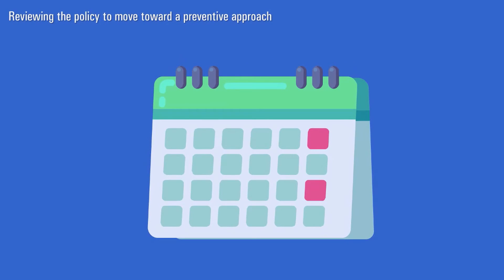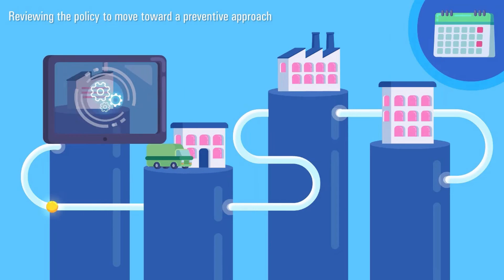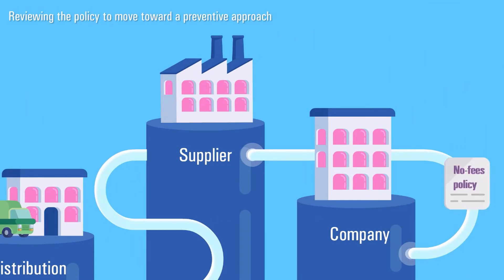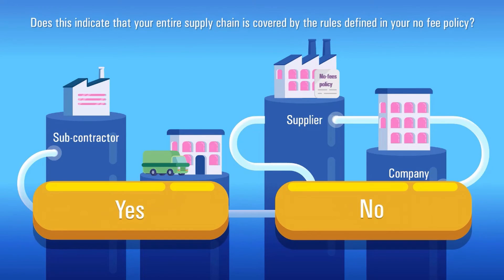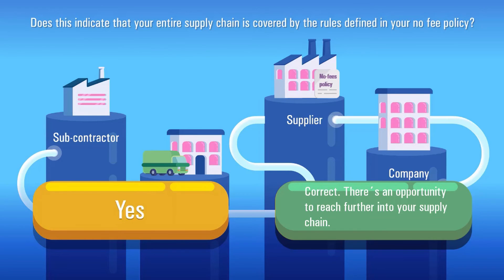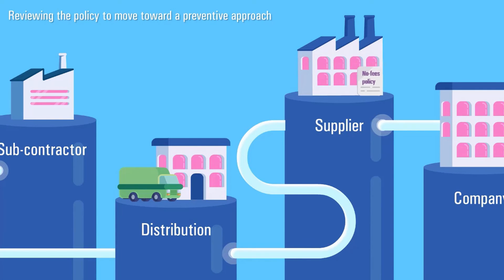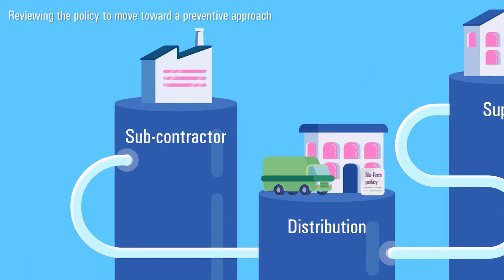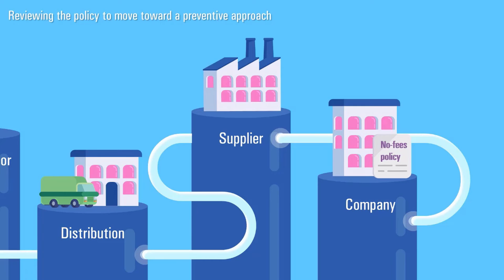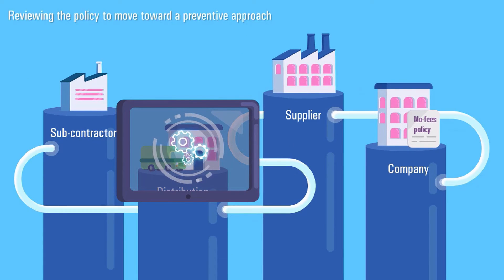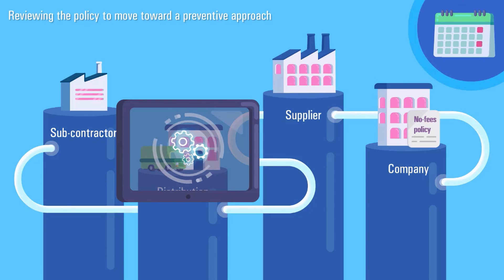Review the implementation of the policy regularly to ensure it covers the full scope of your operations. Your direct suppliers will most likely have suppliers of their own, so it's important to ensure the policy guidelines are passed down the supply chain. Your policy should not only aim to comply with customer requirements — the goal should be to prevent recruitment fees throughout your entire supply chain. That's why you should regularly review the policy to develop preventive approaches and expand its scope.